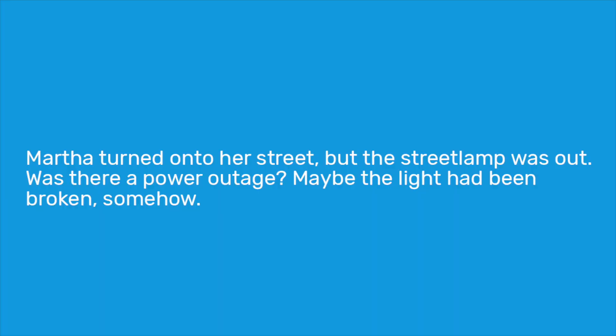However, this also works in third person. For a third person example: "Martha turned onto her street but the street lamp was out. Was there a power outage? Maybe the light had been broken somehow." Even in third person we can seamlessly integrate Martha's thoughts into the narrative if the psychic distance is close enough, meaning the narrative is close enough to her character. We still have an understanding that everything in the narrative is what Martha is feeling, thinking, or experiencing. I really like this method and would recommend it in most cases.